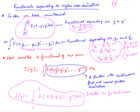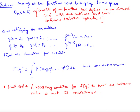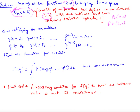Let us try to derive the Euler's equation for this particular case. We want to find, among all the curves y(x) belonging to the space D_n(a,b) — the space of all functions defined on the interval [a,b] such that those functions have continuous derivatives up to order n — the function that extremizes the functional. So D_n(a,b) contains functions f defined on [a,b] such that f, f', ..., f^(n) are all continuous.